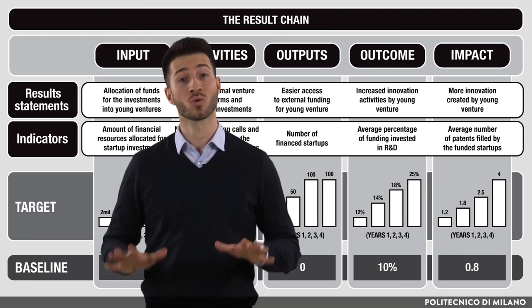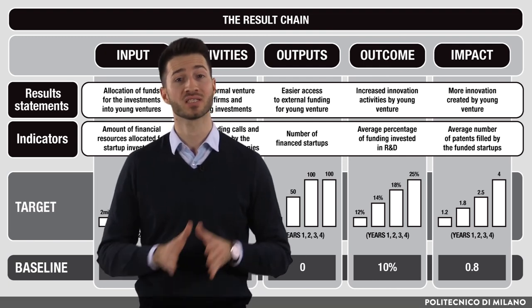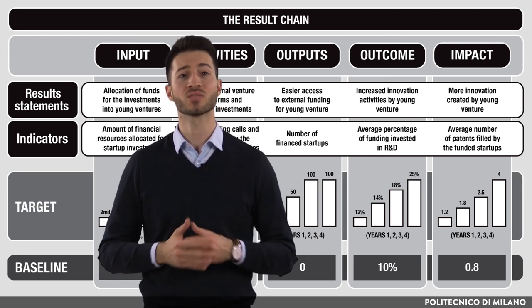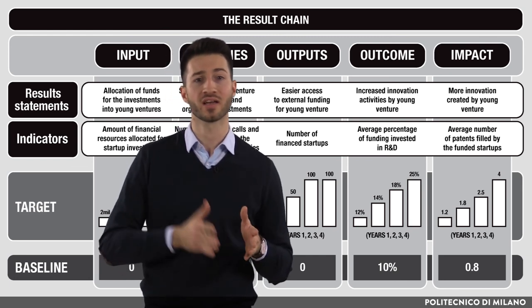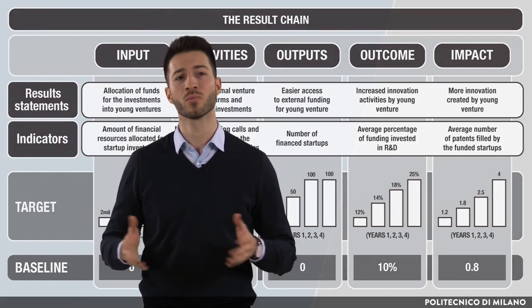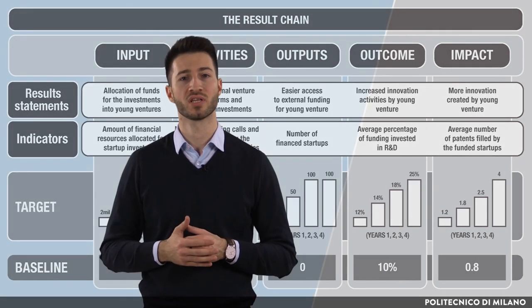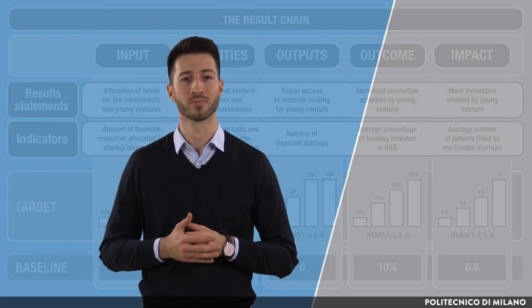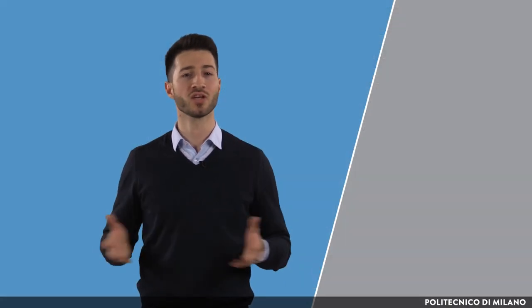So, once we have the result statements defined and corresponding indicators set up, as well as the baseline and target levels established, we can meaningfully monitor the progress and react timely to possible discrepancies from the plan. Eventually, this arrangement will also facilitate the evaluation of the policy based on factual evidence.